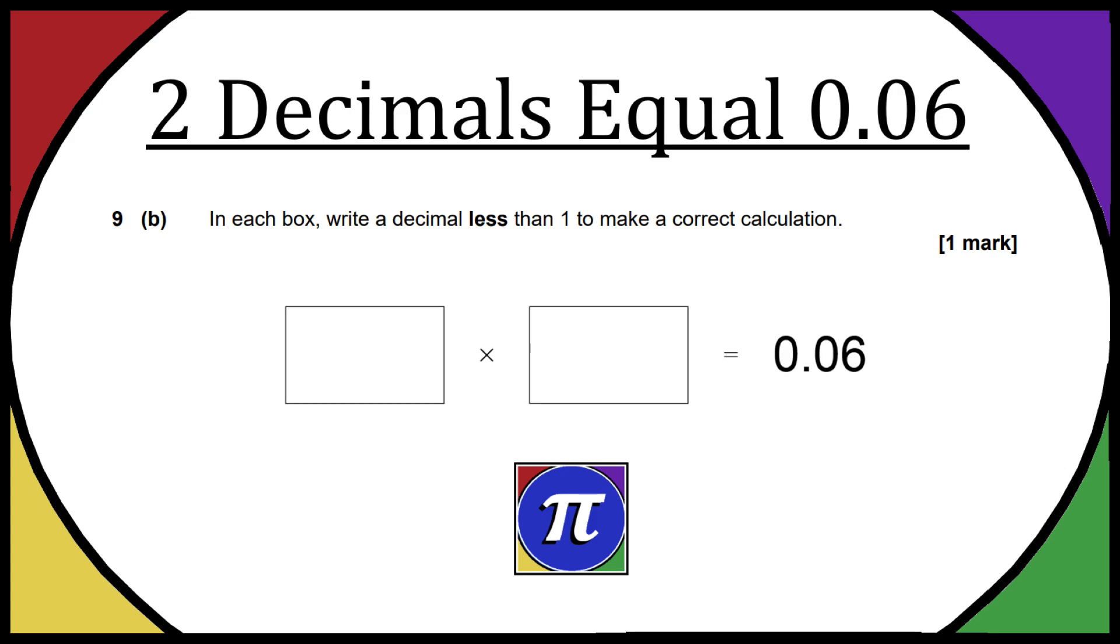Now, my first thought was it's just going to be 0.02 and 0.03, but they actually make each other smaller. So that ends up being like 0.0006 or something like that.